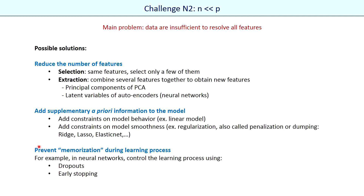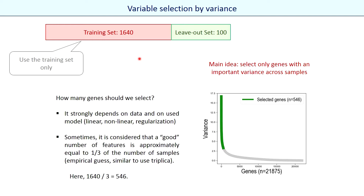There are also specific approaches for neural networks that help avoid memorization of the data during the learning process, for example dropout and early stopping techniques. In our simple case, I propose to reduce the number of parameters using variance. The main idea is to select only genes with an important variation in expression level across samples.